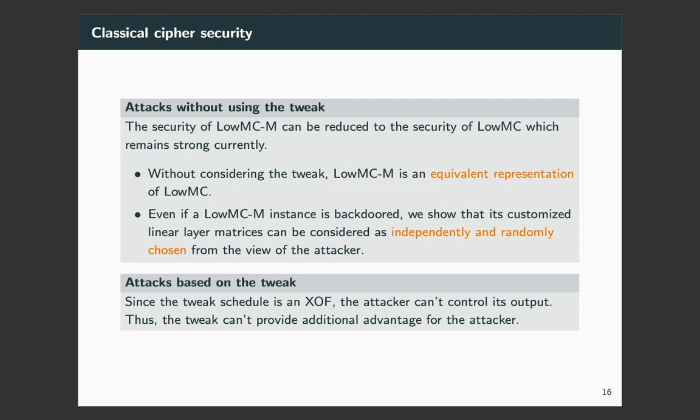Without considering the backdoor, the cipher is also secure in the classical black box model. We proved in our paper that the security of LUMCM can be reduced to the security of LUMC, and currently LUMC remains very secure. Since LUMCM has an additional tweak, we discuss the security in two aspects. The first one is attacks without using the tweak. Without considering the tweak, LUMCM is an equivalent representation of LUMC, and there's nothing different if no backdoor is embedded in LUMCM. Even if a LUMCM instance is backdoored, we showed that the customized linear layer matrices can be considered as independently and randomly chosen from the view of the attacker. Thus, the attacker cannot utilize the special linear layer matrices to attack the cipher.